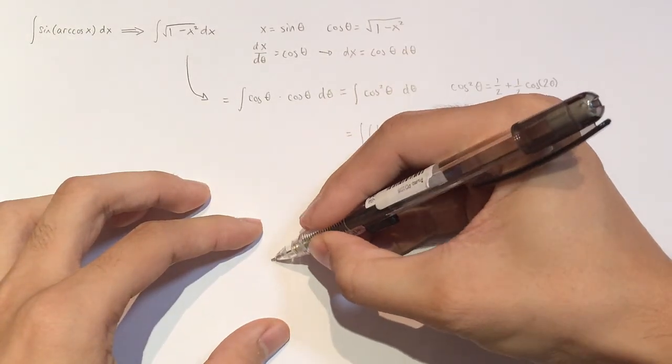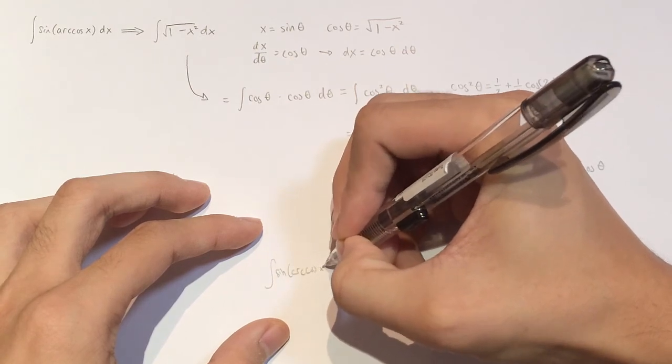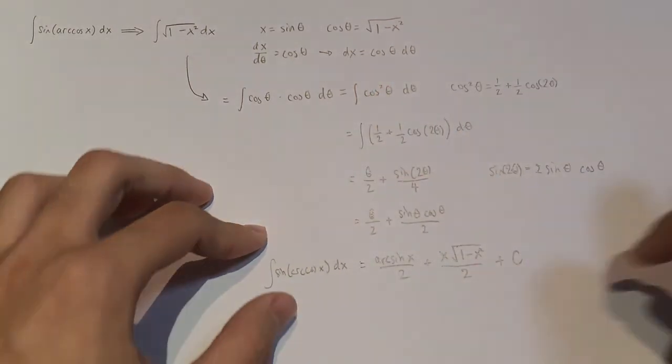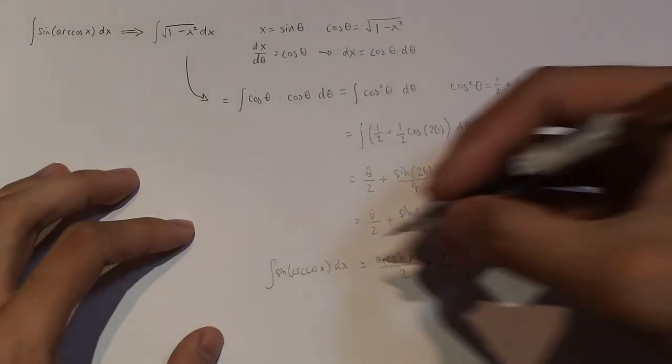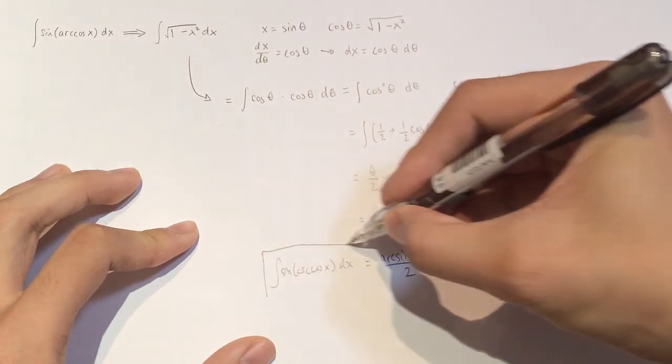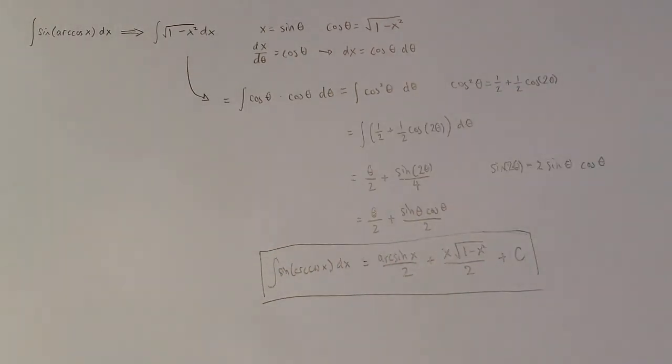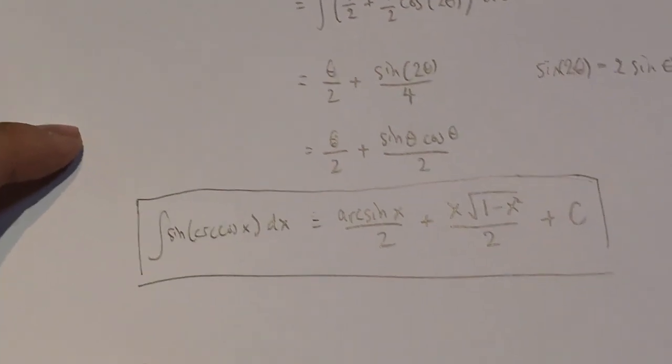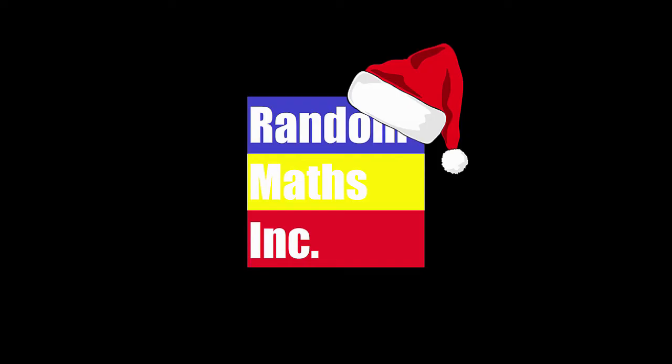And so basically our final integral, the integral of sine of arccos of x equals arcsine of x over 2 plus x times the square root of 1 minus x squared over 2. And there is your final answer right there. Embrace it. Have fun with it. Take it after dinner. I don't know.